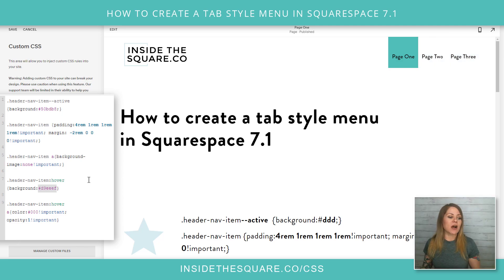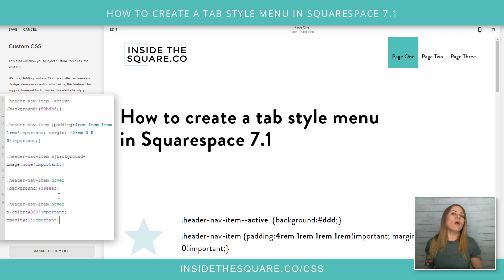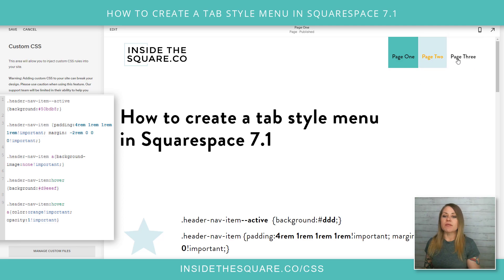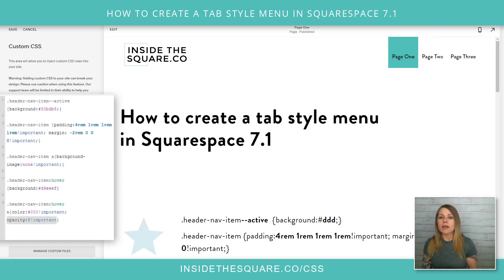It also changes the color of the font. The second line says color hashtag 000 opacity one. What that does is it tells the browser to keep the font that specific color when I'm highlighting over it. I can change that color as well — let's say the word 'orange' if I want it to be that color. Now my font is going to be a different color than it was before. You can adjust that however you see fit. Opacity makes sure that it's a solid color when I hover over it, so I left that line in there.